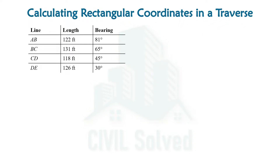Let's say that we have been given a traverse having four lines: AB, BC, CD, and DE. The length and bearing of each of the lines is given. So let's draw the sketch of this traverse first so that we can have an idea about it.